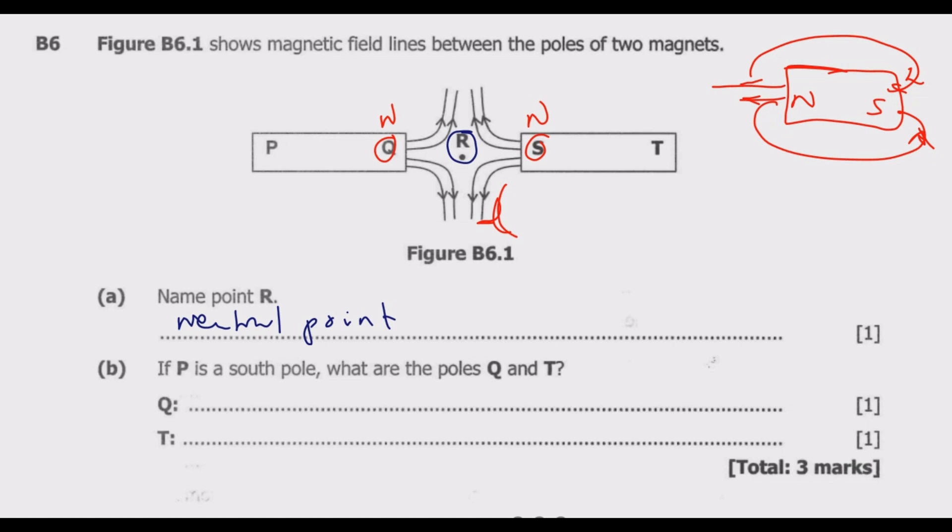If you look at question B: If P is a south pole, what are the poles Q and T? This should be south, then Q will be north. You notice that Q is a north pole. Then T will be a south pole. These are the key things you need to do to get the three marks.